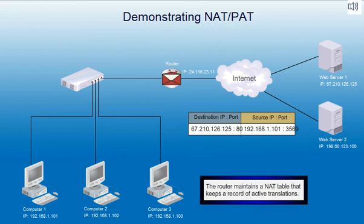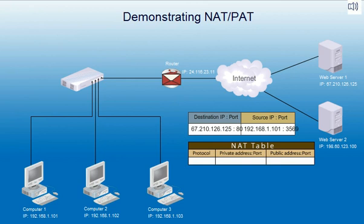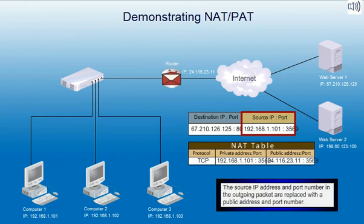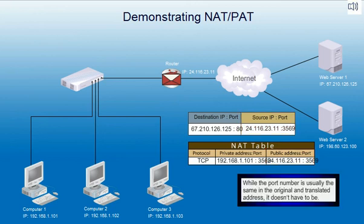The router maintains a NAT table that keeps a record of active translations. The source IP address and port number in the outgoing packet are replaced with a public address and port number. While the port number is usually the same in the original and translated address, it doesn't have to be.